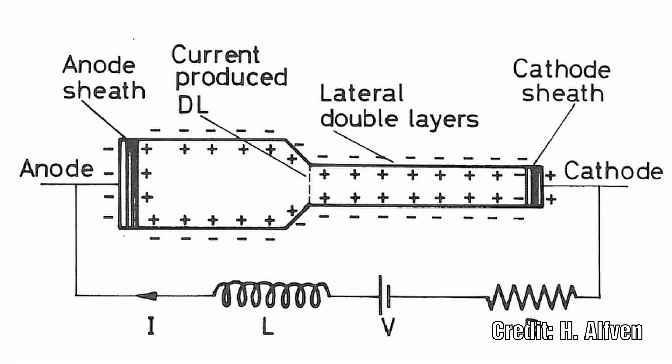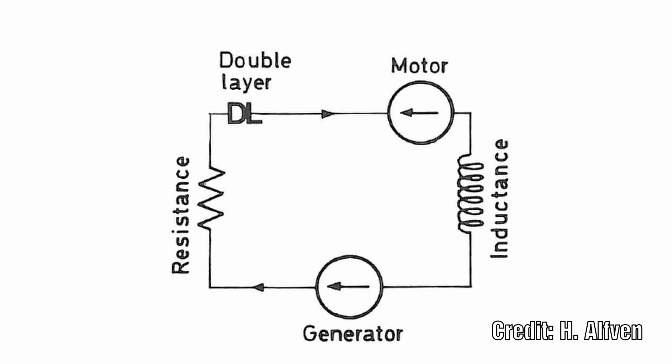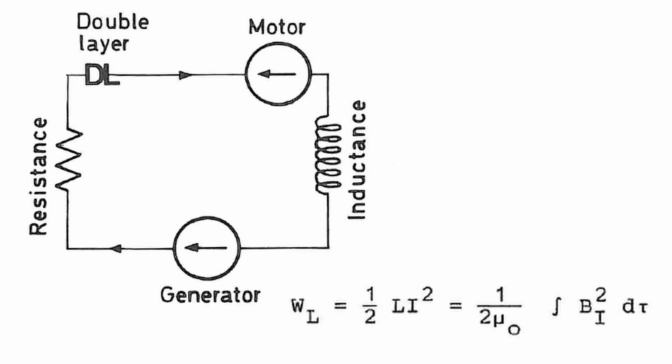A double layer that releases power must be part of a circuit in which a current flows. If we examine a simple circuit containing a double layer which is depicted by D and L written together with the L pointing in the direction of the current. Besides the double layer the circuit contains an inductance in which energy is stored according to the following formula, where Bi is the magnetic field produced by the current I and dt is the volume element. If a magnetised plasma with a field Bo moves with a velocity v in relation to the circuit it produces an EMF in the circuit given by this equation, where ds is a line element in the direction of I.